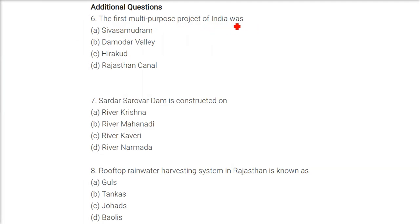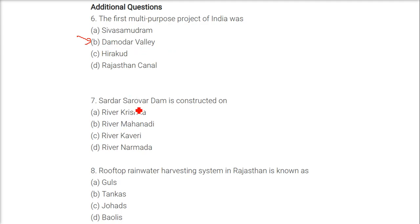The first multi-purpose project of India was? The answer is Damodar Valley. We will mark it as Damodar Valley.